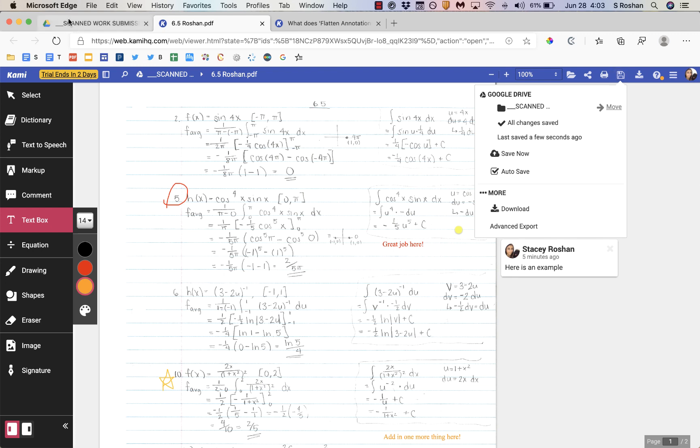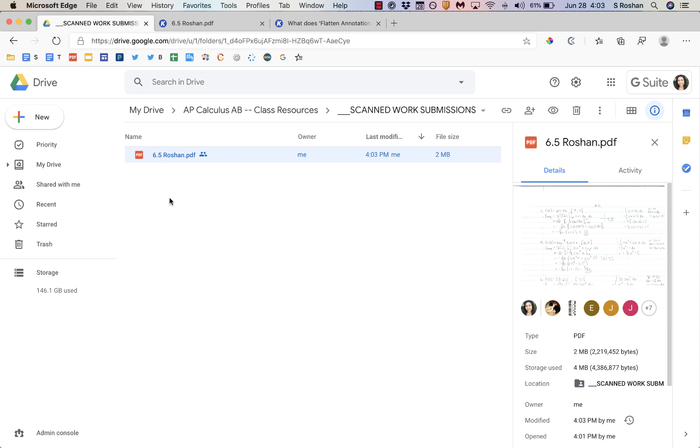Then students will be able to just go to their folder. Not the scanned work submissions because everything's going to be gone from there after I grade it. They'll go to their private folder and that's where they can access all their work over time. It's always there with my annotations. So I hope this helps as you think about your workflow for making things paperless in your classroom. That's it for now. Bye.